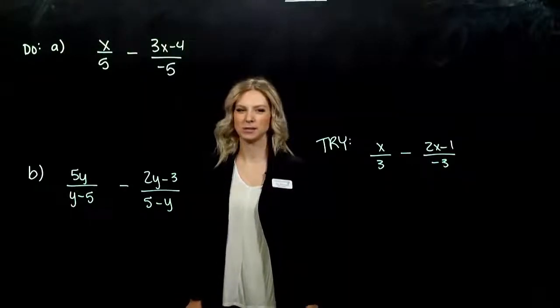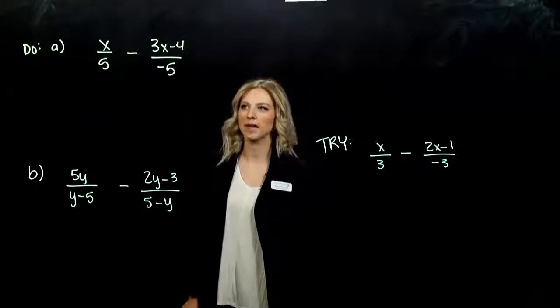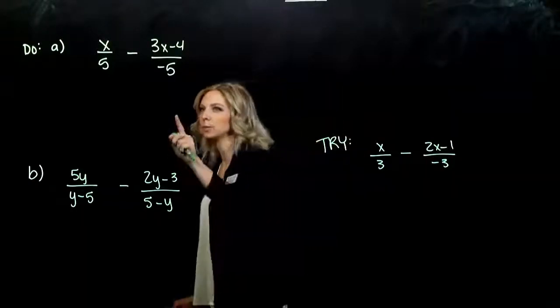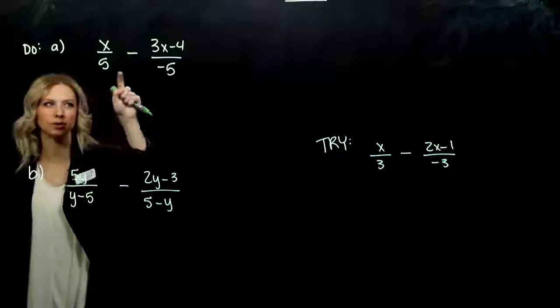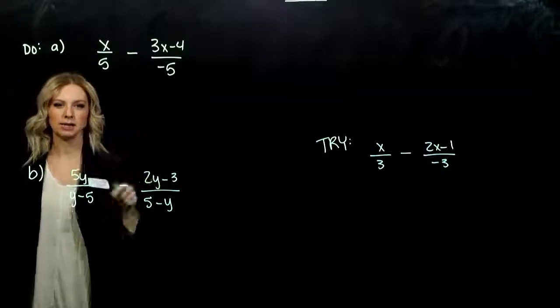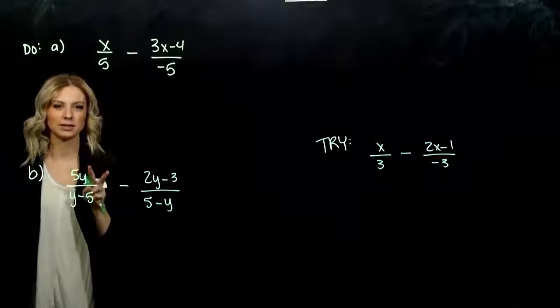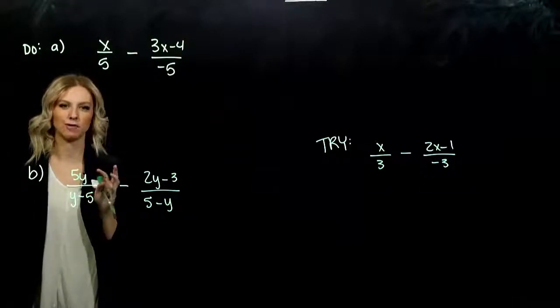Last part of this section deals with some more tricky cases when we have opposites. Looking at that first example, when we look at those denominators, we need common ones, and they're pretty darn close. But what's the difference between them? A factor of a negative.